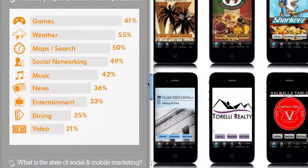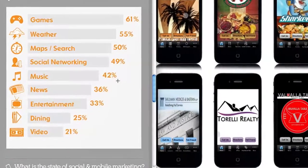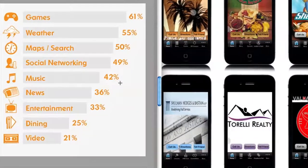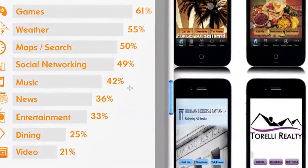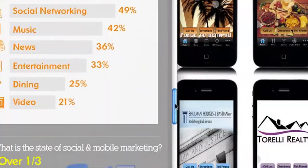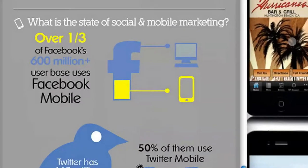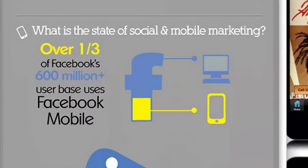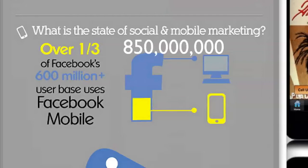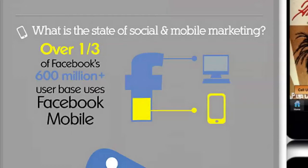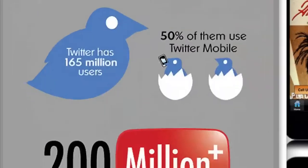91% of mobile internet access is to socialize compared to 79% on desktops. So people don't go anywhere without their phones. What do they use their mobile phones for? Games, weather, maps, social networking, music, news, entertainment, dining, video. Over one third of Facebook's 600 million plus user base uses Facebook mobile — obviously that number is higher now, it's 850 million, and it might be 875 million the way they're growing.